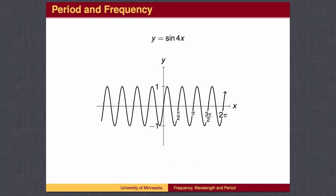For y equals the sine of 4x, the wave should be 4 times as narrow, so that instead of going through a full wave every 2 pi, it goes through a full wave 4 times as fast, or every pi over 2. The wavelength, or period, is pi over 2. In general, the period is 2 pi divided by b.